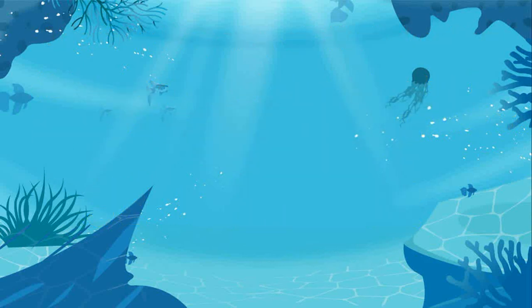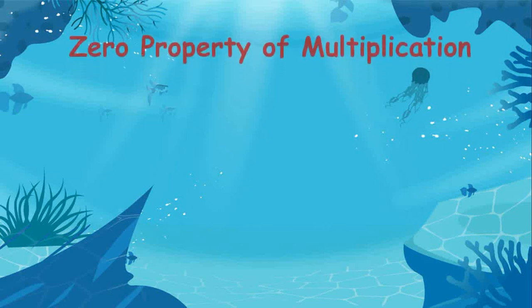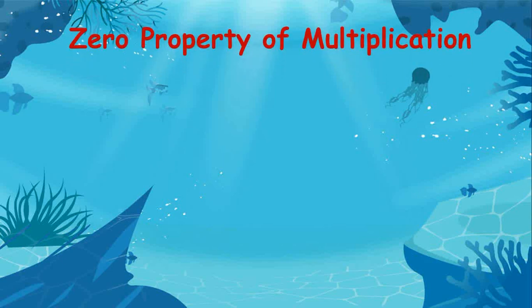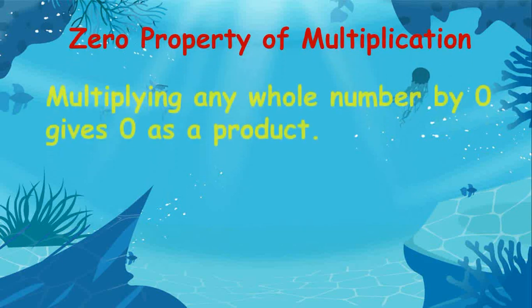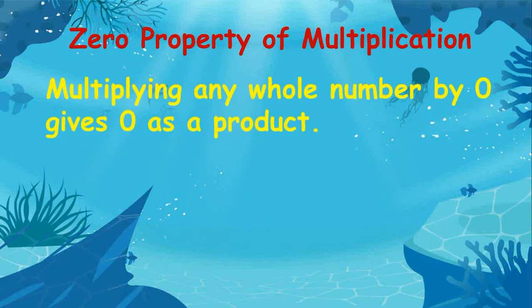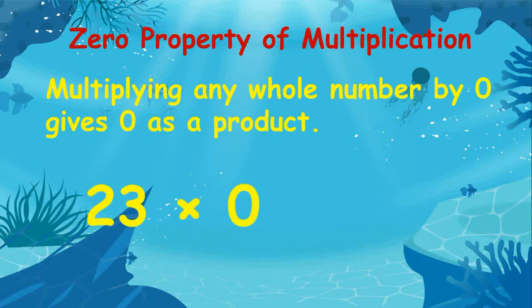There is also the zero property of multiplication, where multiplying any whole number by 0 gives 0 as a product. An example is 23 times 0 equals 0.